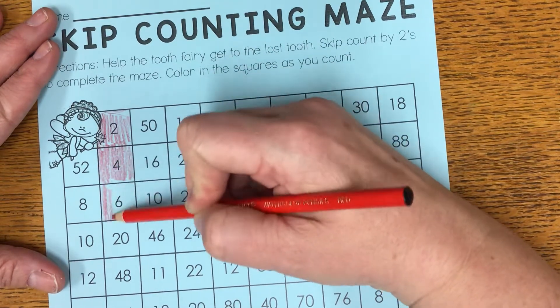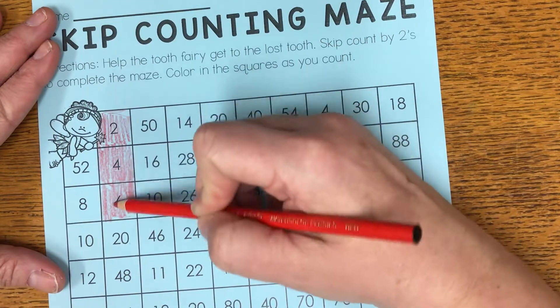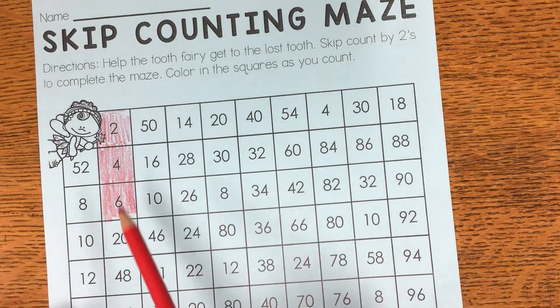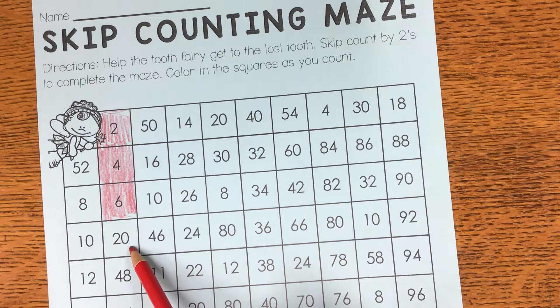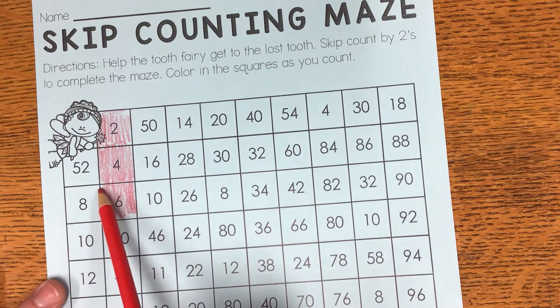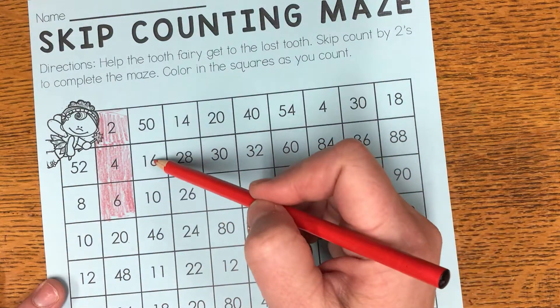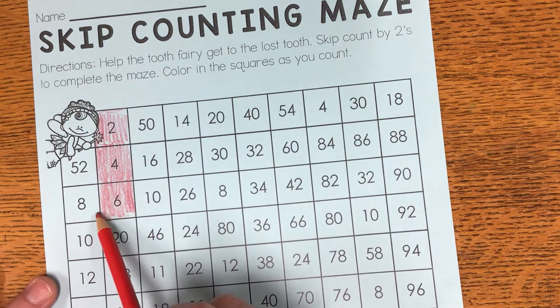And then I continue on to six. And then I notice that there is not an eight below. There is a twenty below. So I need to find the eight. And it needs to touch it on a full side. So if my eight was up here, it wouldn't work. But I am lucky because I have an eight right here.